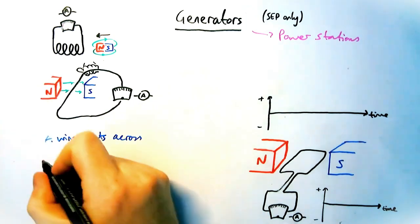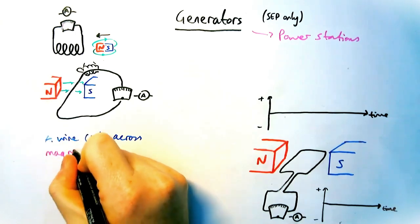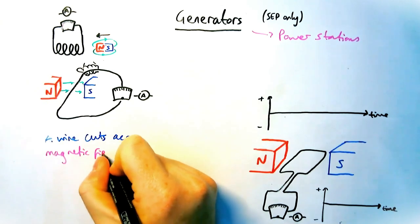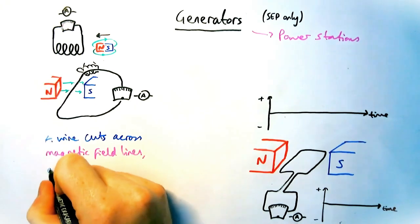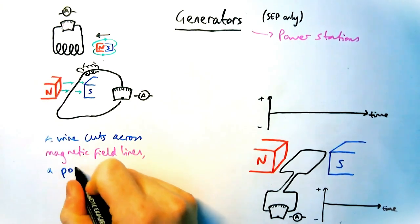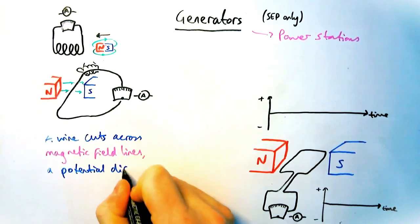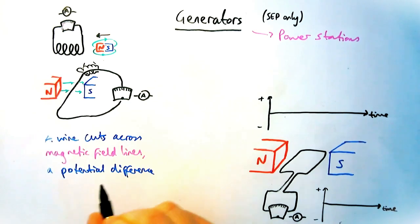Both these diagrams here involve a magnet and a wire. And the definition I'm writing here is for the generator effect, which is a wire that cuts across magnetic field lines. There is a potential difference induced. It's also known as electromagnetic induction.